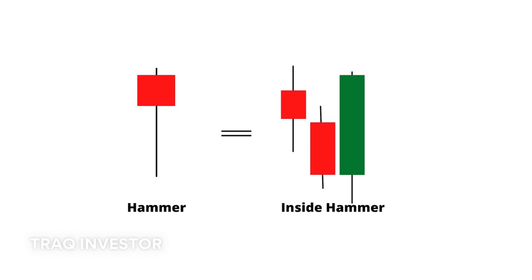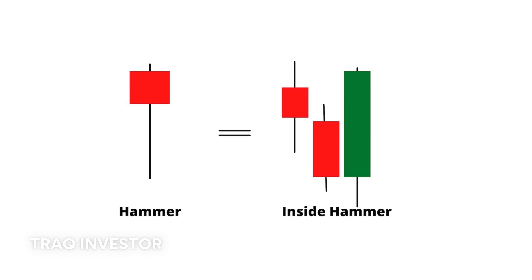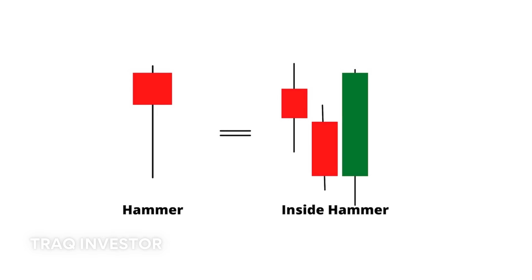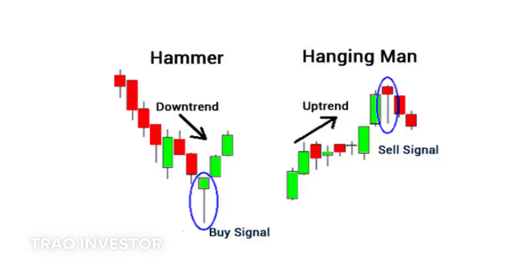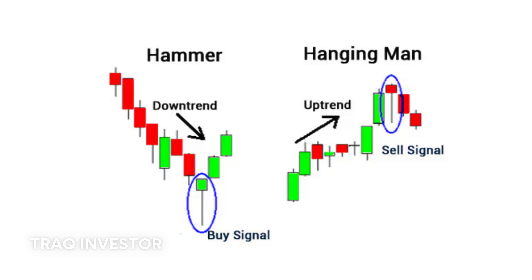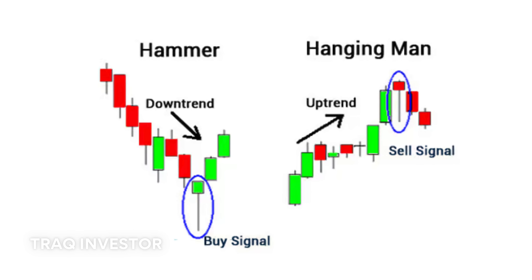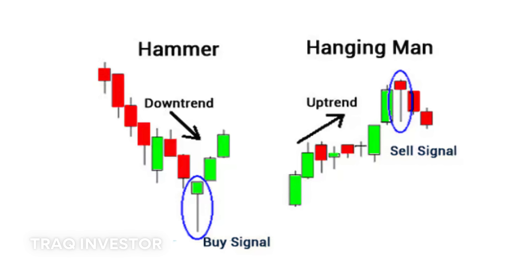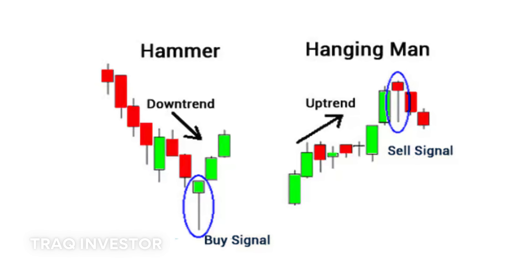The hammer comprises a short body with a long lower wick and is typically found at the bottom of a downward trend. It indicates that despite selling pressures throughout the day, robust buying pressure ultimately drove the price back up. The body color can vary, but a green hammer suggests a stronger bull market than a red one.